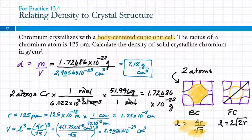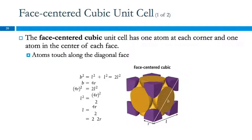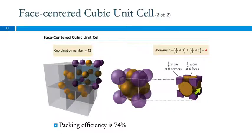Student question: why does the face-centered cubic have 4 atoms when the body-centered only has 2? The purple corner pieces add up to one atom (1/8 × 8). On each side of the cube is half an atom, and there are 6 sides, giving 6 × ½ = 3 atoms from the face atoms. So 1 + 3 = 4 atoms total. The body-centered is like sticking a whole atom inside the simple cubic — just one extra atom in the middle — so it's only 2.